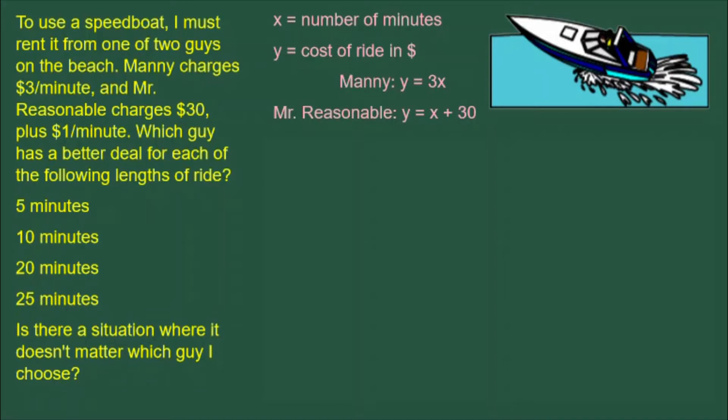We'll look at rides of 5, 10, 20, and 25 minutes. The model is given: X is the number of minutes, Y is the cost of the ride in dollars. And we have two equations, both of which have the variables defined that way.